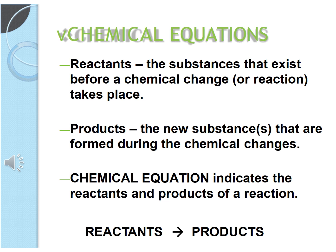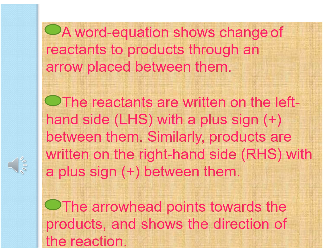Tail of the arrow represents reactants and head of the arrow represents products. Reactants are written on the left hand side and products are written on the right hand side. If there is more than one reactant and products then there is plus sign between them. The arrow head points towards the products and shows the direction of reaction.